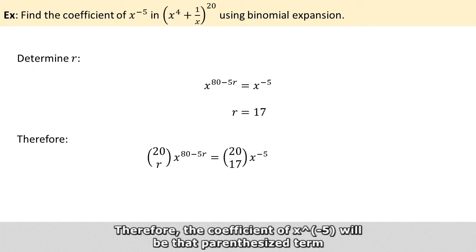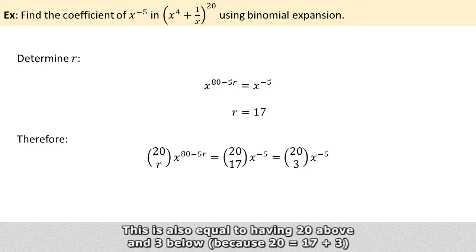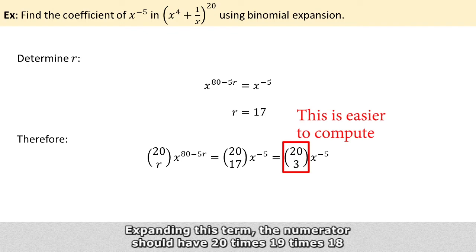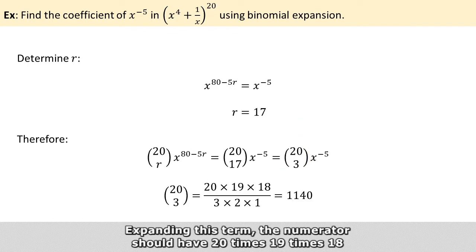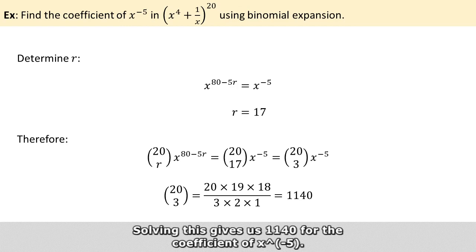Therefore, the coefficient of x raised to the power of minus 5 will be that parenthesized term with 20 above and 17 below. This is also equal to having 20 above and 3 below. Expanding this term, the numerator should have 20 times 19 times 18, and the denominator should have 3 times 2 times 1. Solving this gives us 1140 for the coefficient of x to the power of minus 5.